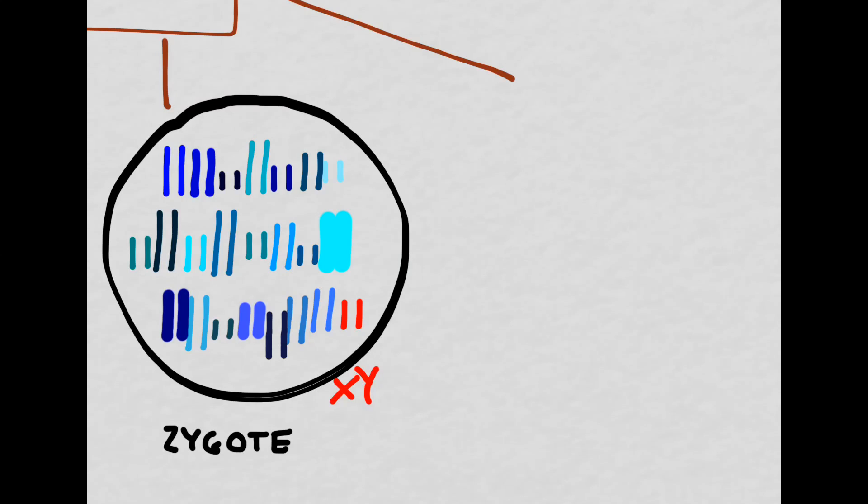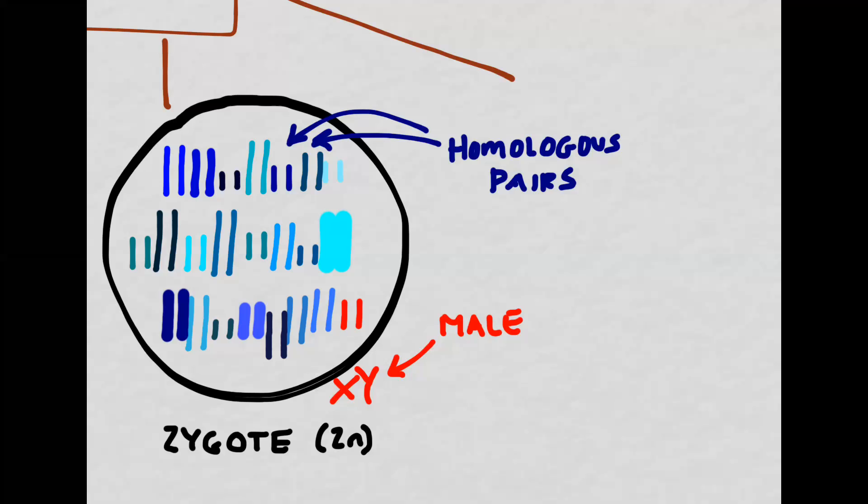Let's now imagine that fertilization has occurred and the sperm and egg have united to form one zygote. This zygote is going to be diploid. It has one set of chromosomes from the mother and one from the father, meaning that you now have two of each variety of chromosome. This zygote would ultimately be male because it has an X and a Y chromosome for the 23rd pair. Each of the varieties of chromosome will line up with the corresponding chromosome from the other contributing parent. These are called homologous pairs.